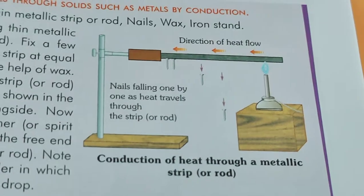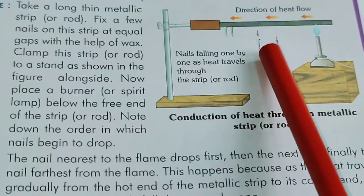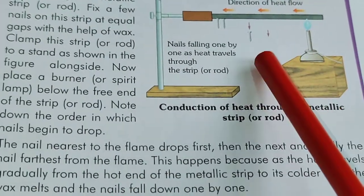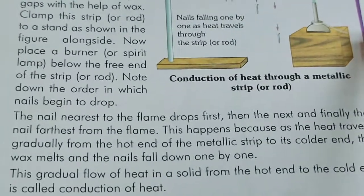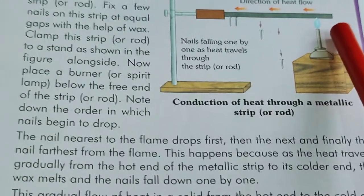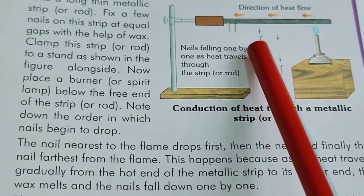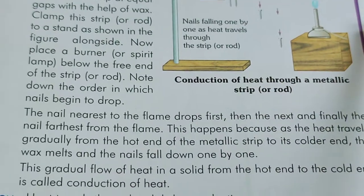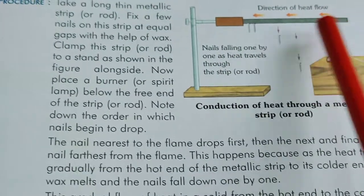Please observe the order in which the nails fall down from the rod. We will see that the nail nearest to the flame drops first, then the next, and finally the nails farthest from the flame. This happens because heat travels gradually from the hotter end of the metallic rod to its colder end, the wax melts gradually, and the nails fall one by one in this order. This gradual flow of heat in a solid from the hotter end to the cooler end is known as conduction of heat in solids.